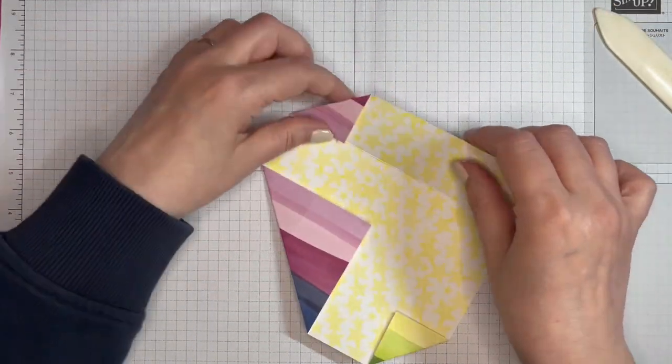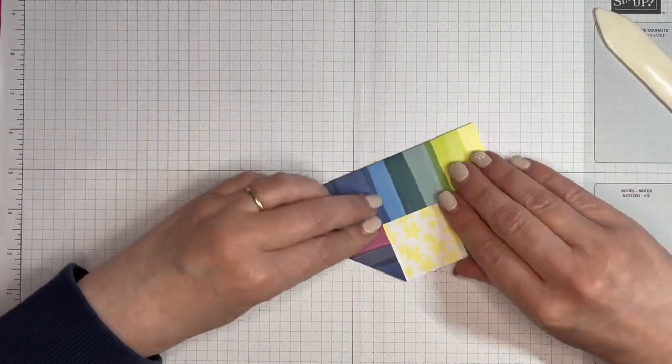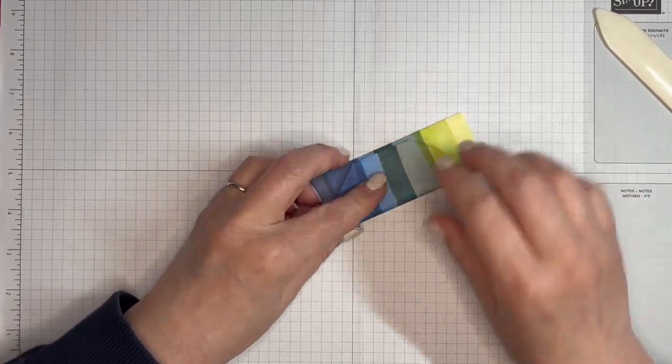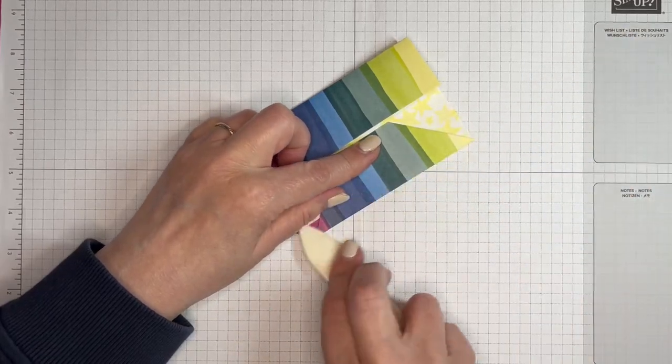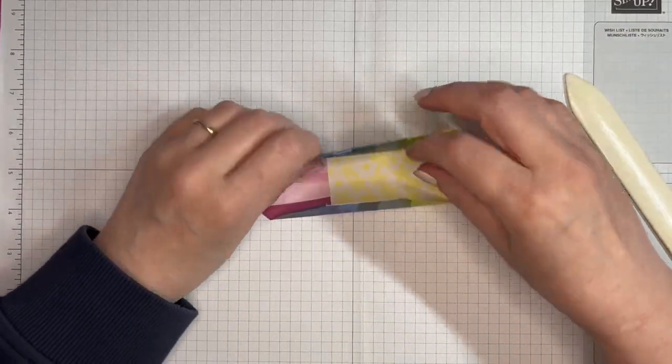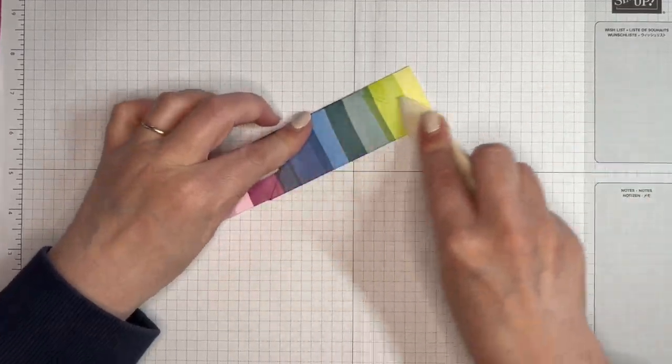So that's what you've got. This bit folds over, that bit folds over there, and that bit folds over there. Now you might need to give that second burnish because you've folded it since you burnished that first time. There you go, that works better.